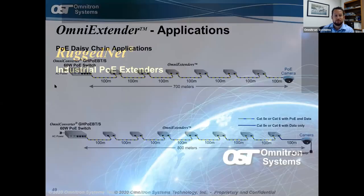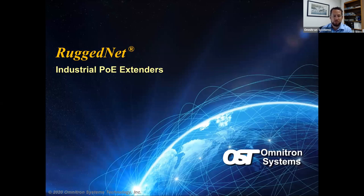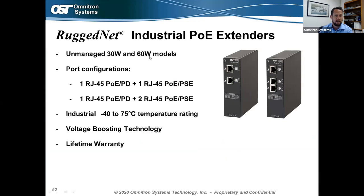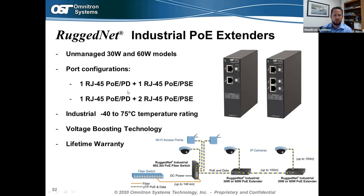The RuggedNet industrial PoE extenders use the same concept — 30W or 60W models, unmanaged — but in a ruggedized form factor with a DIN rail clip, -40 to 75°C temperature rating, voltage boosting technology, and a lifetime warranty. A typical application: a fiber switch connects to a RuggedNet PoE switch which drops off PoE; one of those PoE ports powers the RuggedNet industrial PoE extender, which in a two- or three-port model drops off PoE to a camera and extends another 100 meters to the next drop.